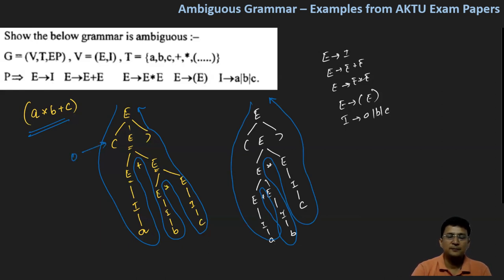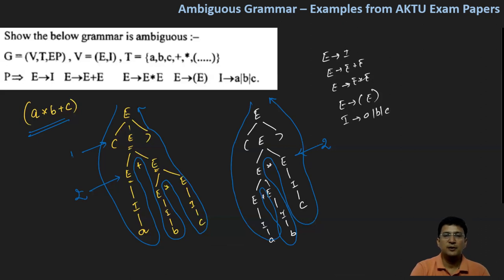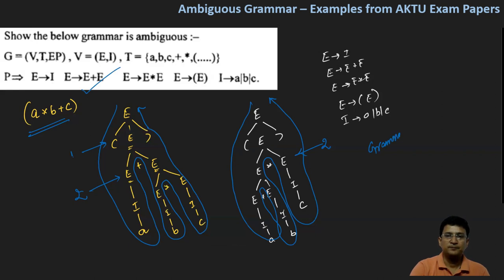Level one is the same in both derivations. At level two, E plus E was used in the first derivation, and E multiplied with E was used in the second derivation. Since two different leftmost derivation trees are possible for the same string using the production rules of the grammar, we can say the grammar is ambiguous. Thanks for watching this video.